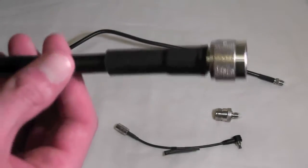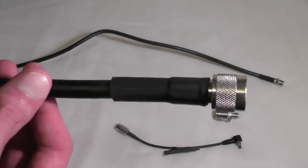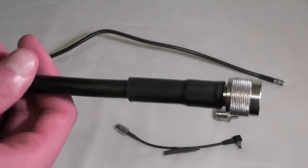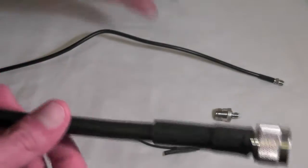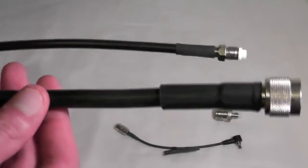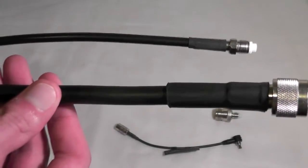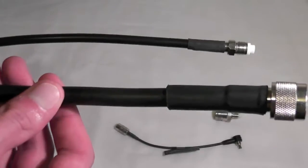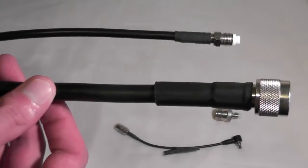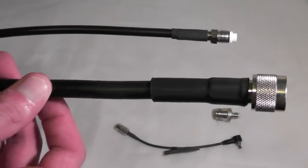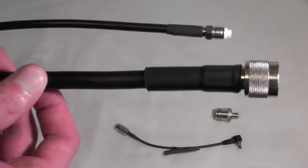I typically don't advise running lengths more than 50 feet of the LMR400 without an inline amplifier. But as you can see it's very thick in contrast to the RG58 cable. So that helps preserve a lot more of the signal, so if you're running a longer cable run it's going to be a lot more ideal for your scenario.